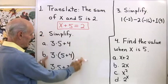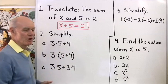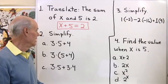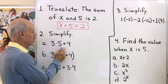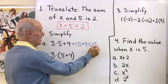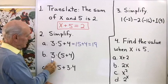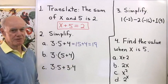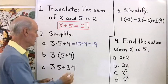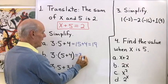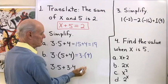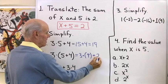Let's simplify these expressions. 3 times 5 plus 4: the rule for order of operations tells us to do multiplication before addition. So 3 times 5 is 15, plus 4, that's 19. In this case we have 3 times the quantity 5 plus 4, so the order of operations tells us to work inside the parentheses first. 5 plus 4 is 9, so 3 times 9 is 27.